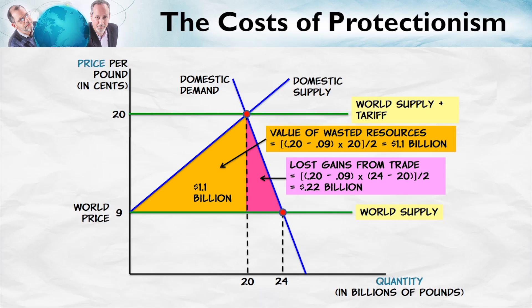With these kinds of numbers, we can find that the costs of the sugar tariff are 1.32 billion. Economists do these kinds of calculations all the time.